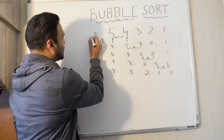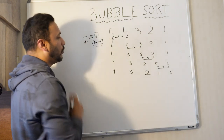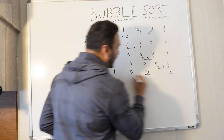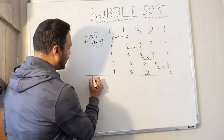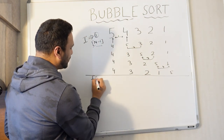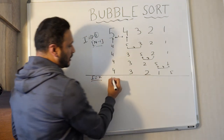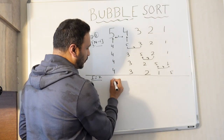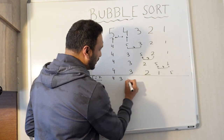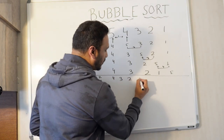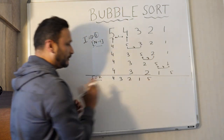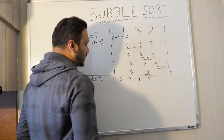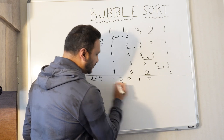In the first iteration where i equals 1, we did n minus 1 swaps. Now we move to the second iteration where i equals 2. The last output from iteration 1 was [4, 3, 2, 1, 5]. We check 4 and 3 — 3 is smaller, so we swap to get [3, 4, 2, 1, 5].